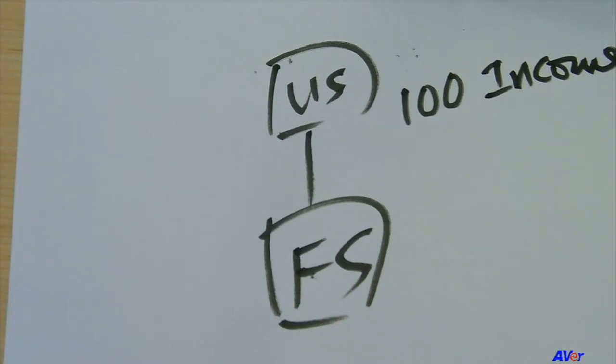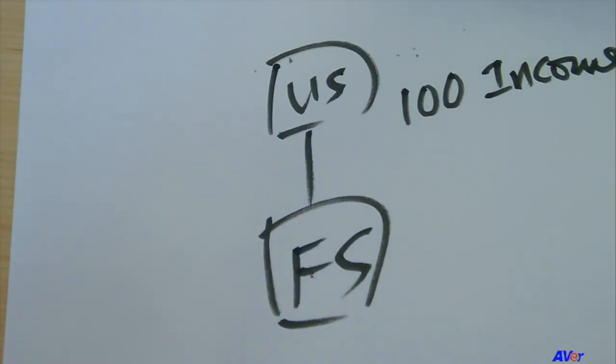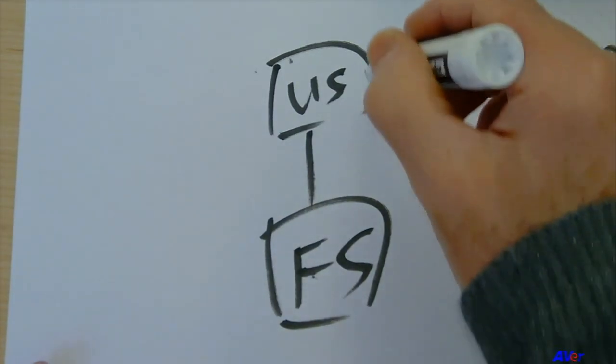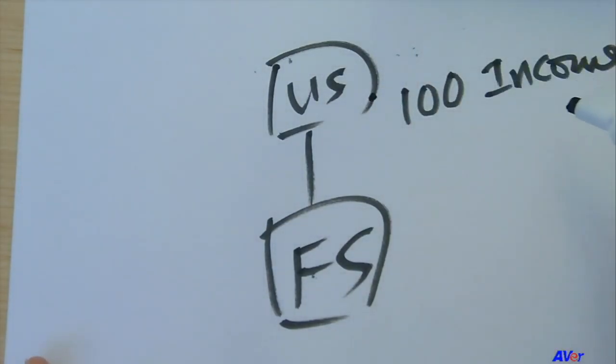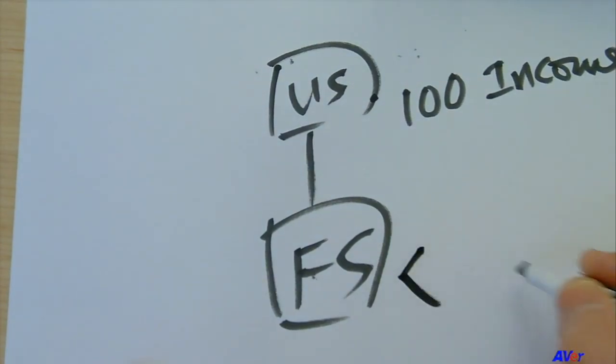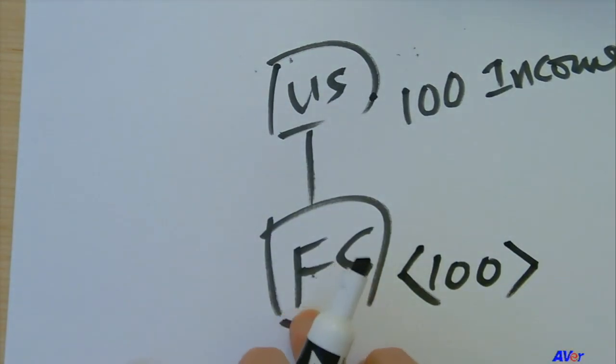And again, we're saying that there's been 100 of additional income here. The second type of adjustment is that for U.S. tax purposes, if the parent had 100 of increase, then there is a corresponding 100 decrease in the income of the foreign subsidiary.